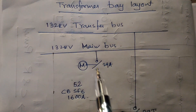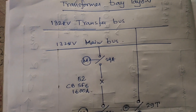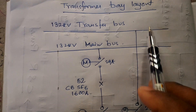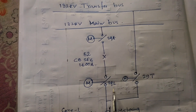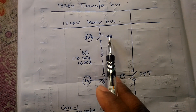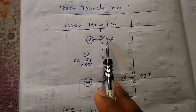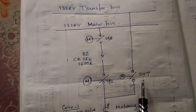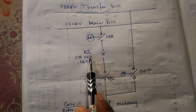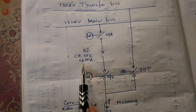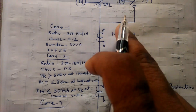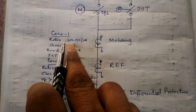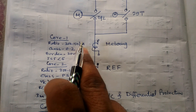The substation has two bus systems: the transfer bus system and the main bus system. Here we have isolators 29A, 29L, and 29T — the main bus isolator, the line side isolator, and the transfer bus side isolator. 52 is the SF6 circuit breaker rated 1600 ampere, 132 kV.